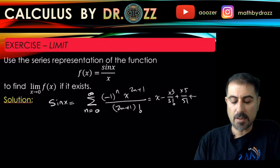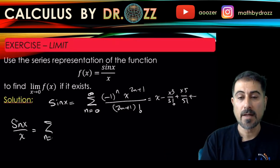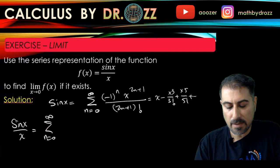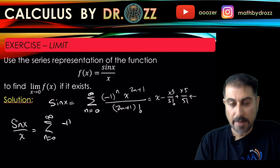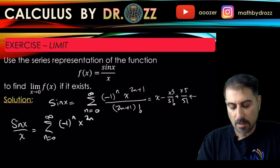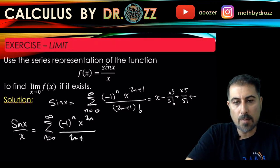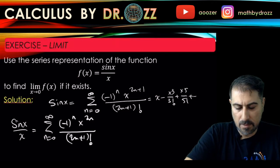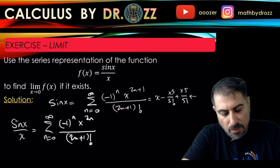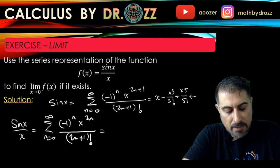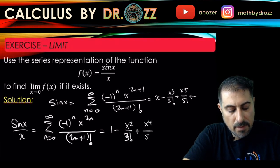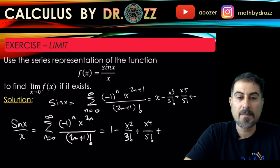I just copied the power series representation of sin(x), so I need the power series of sin(x)/x. All I'm gonna do is divide everything by x, so I have (-1)^n * x^(2n) divided by (2n+1) factorial. This is looking like 1 - x²/3! + x⁴/5! and on and on.